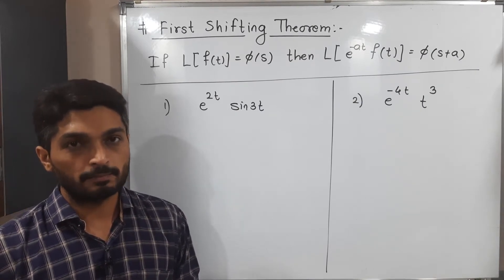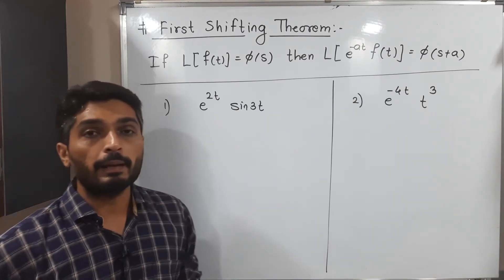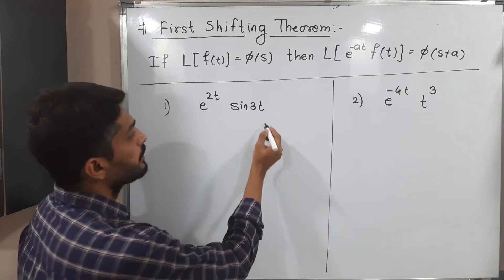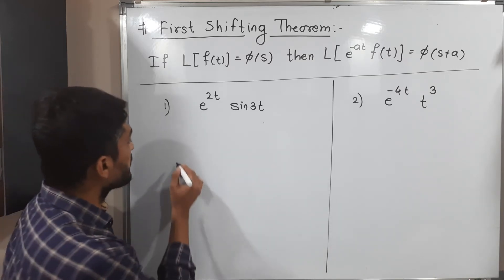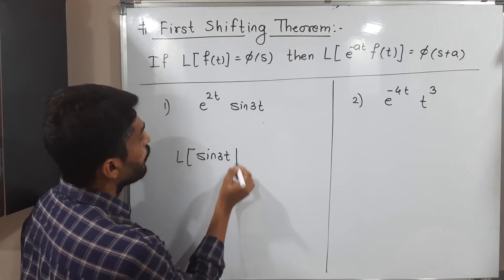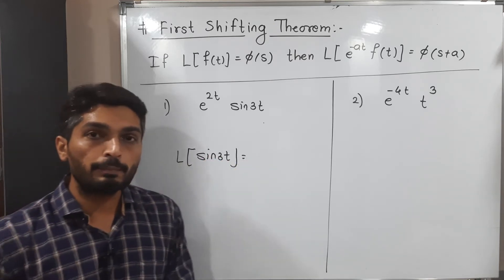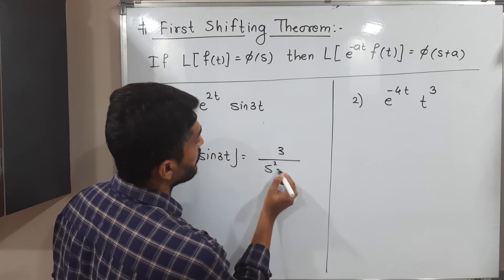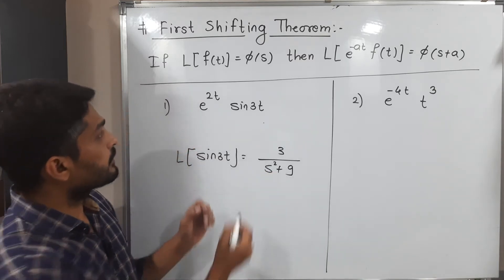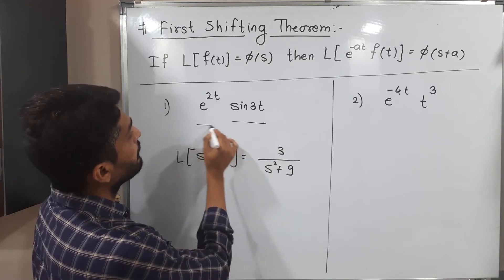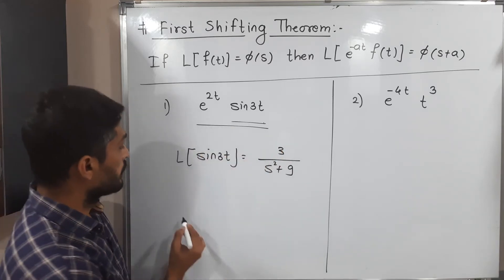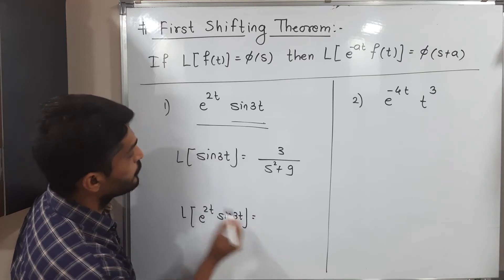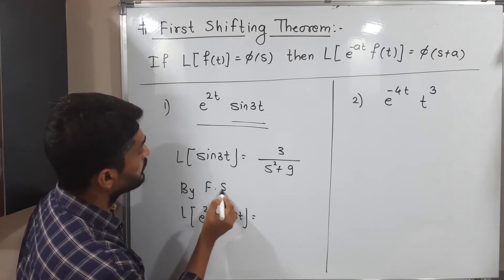Let us discuss two examples. The first one: we have to find Laplace of e raised to 2t times sin(3t). First we focus on the function on the right-hand side, which is sin(3t), and we can easily write its Laplace. Laplace of sin(3t) is 3 upon s² plus 9. Then to find the Laplace of the entire function e raised to 2t sin(3t), we apply the First Shifting Theorem.